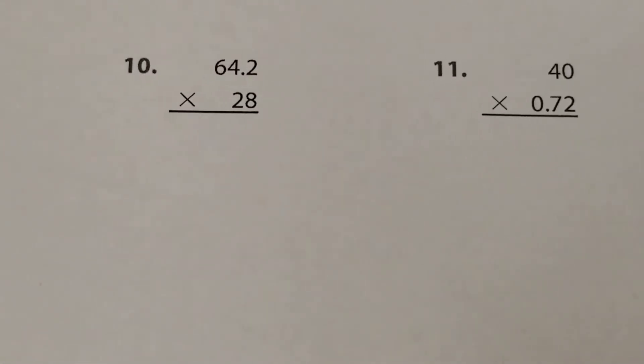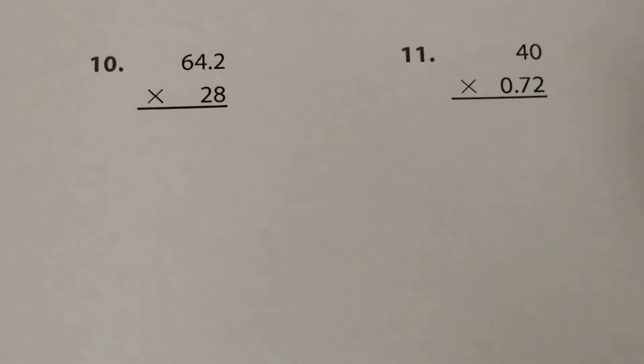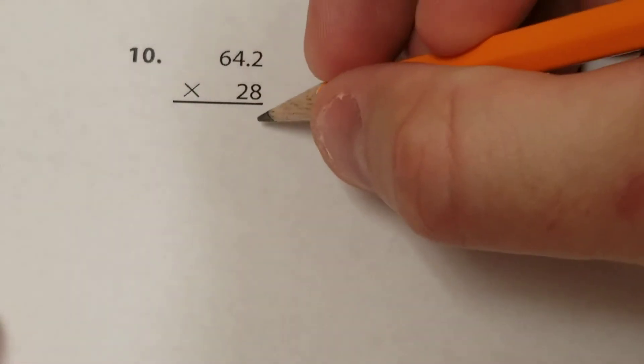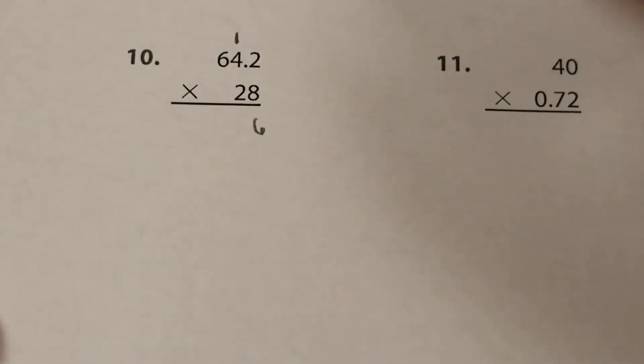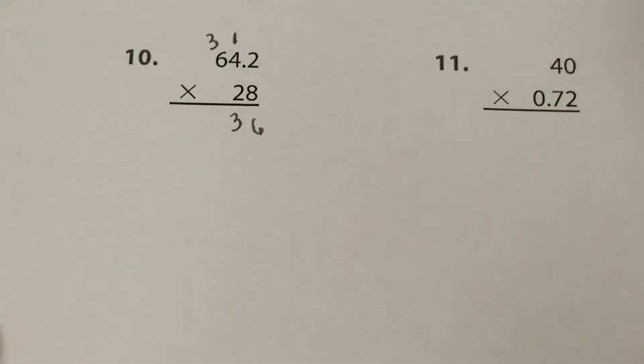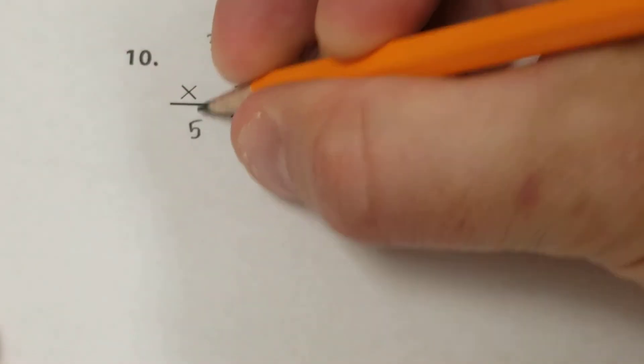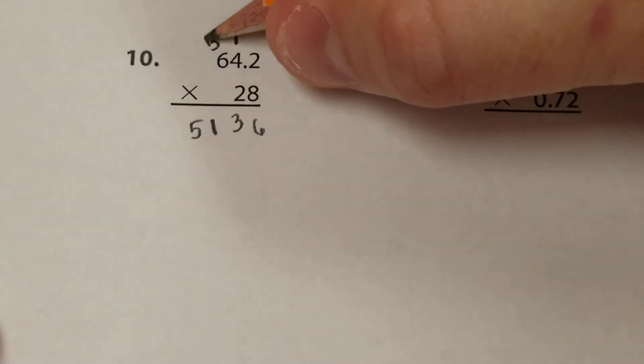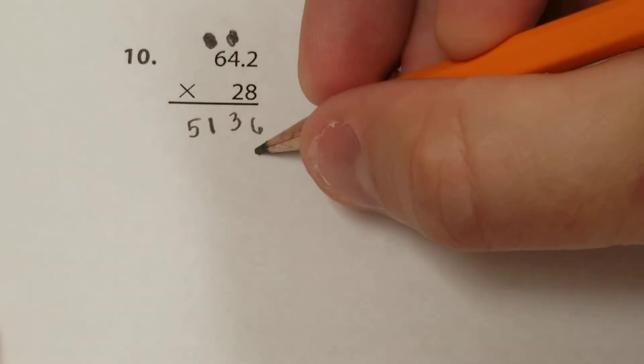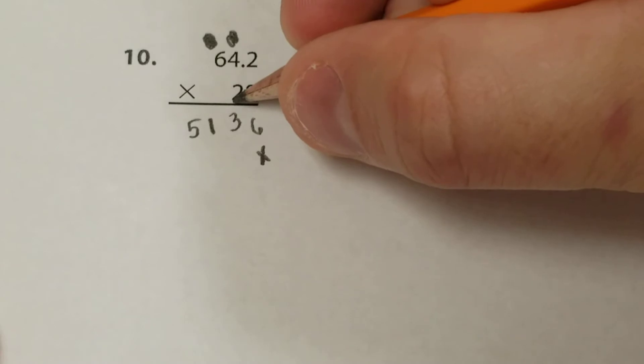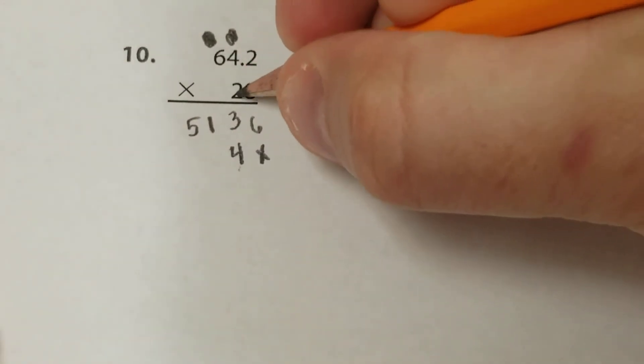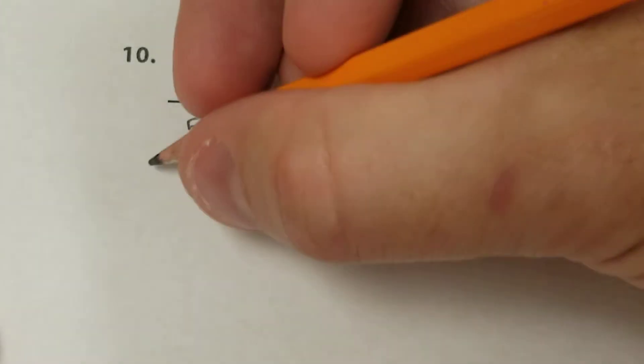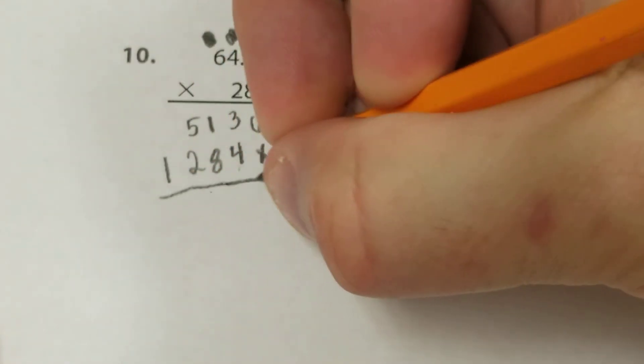We have 64.2 times 28. Again, just ignore the decimal right now and just multiply as normal. 8 times 2 is 16. 8 times 4 is 32, plus 1 is 33. 8 times 6 is 48, 48 plus 3 is 51. I've already used these regroups, so I'm going to get rid of them. I'm going to put in my placeholder because I'm moving over to the tens column.